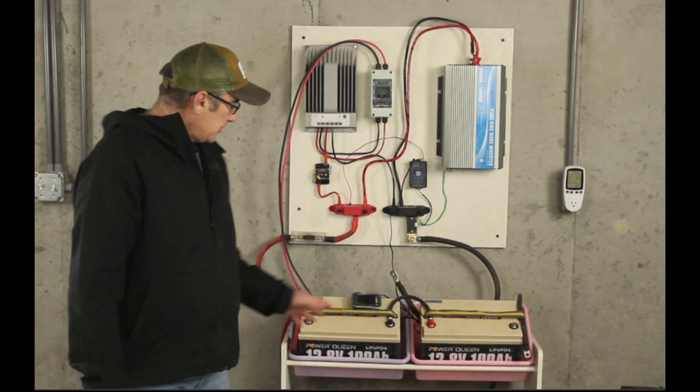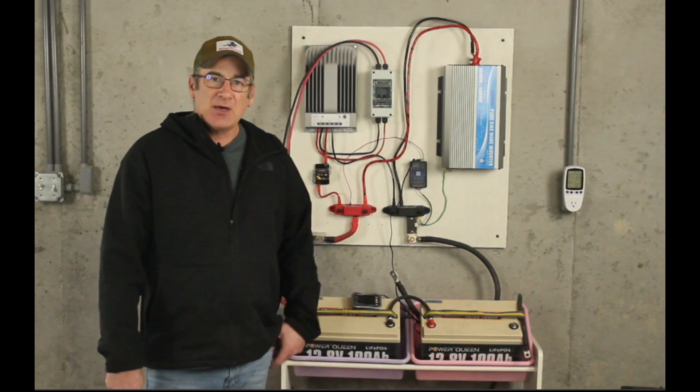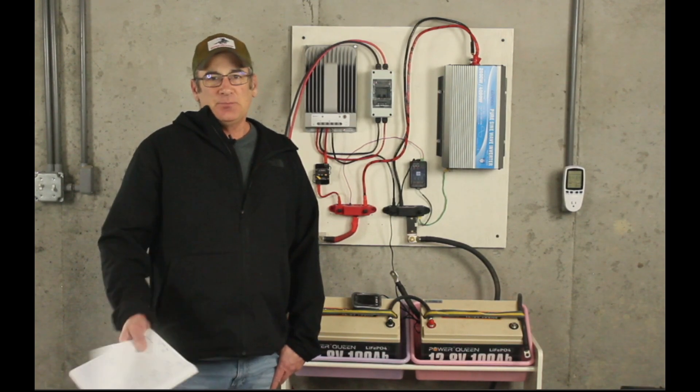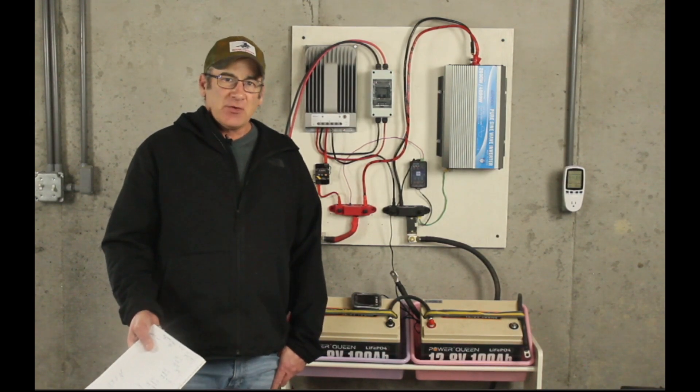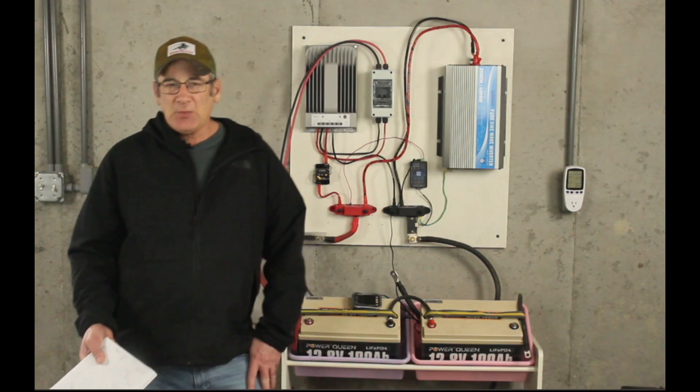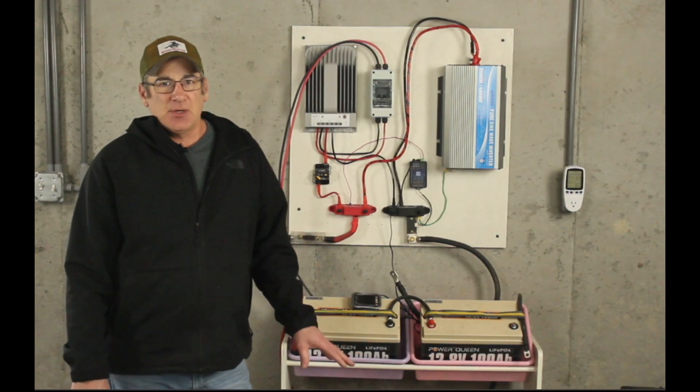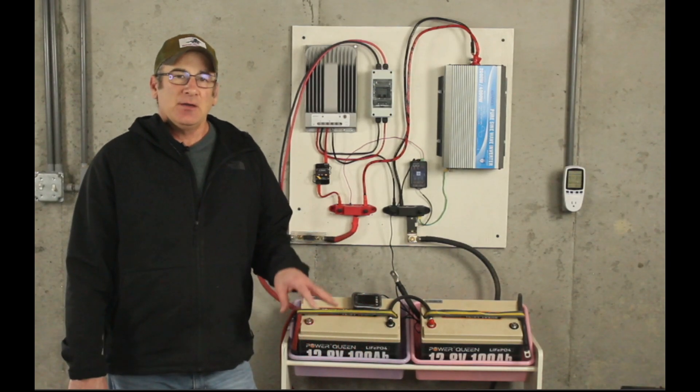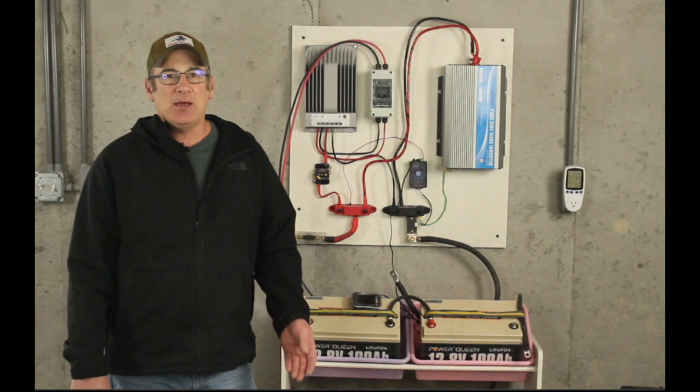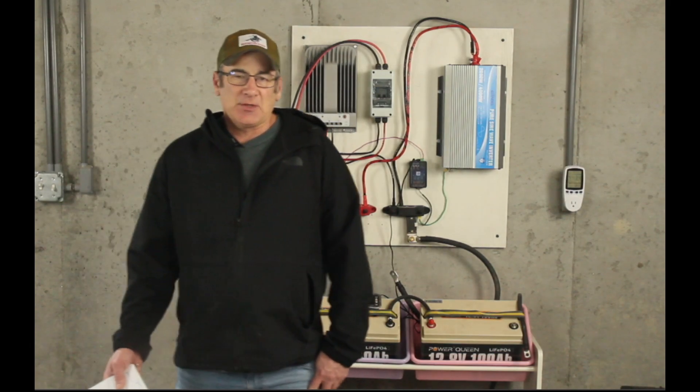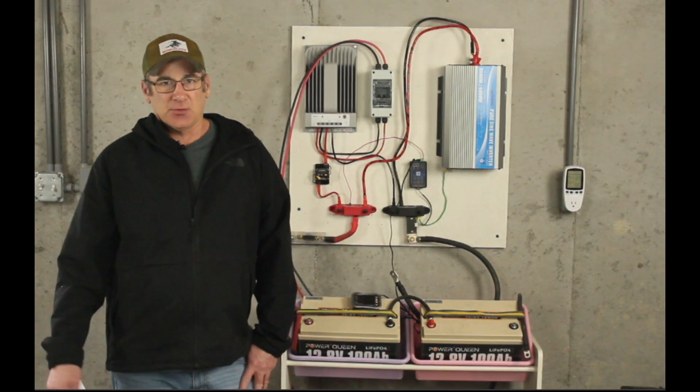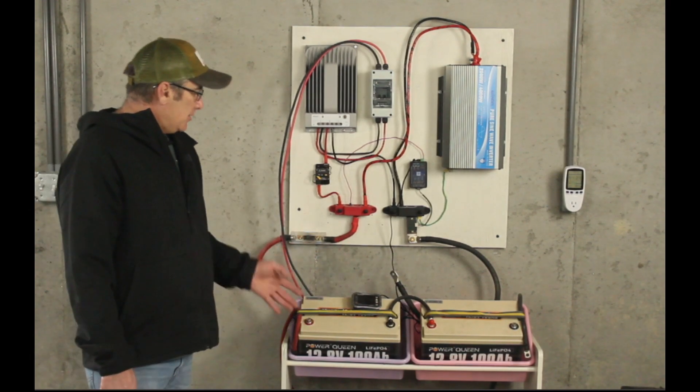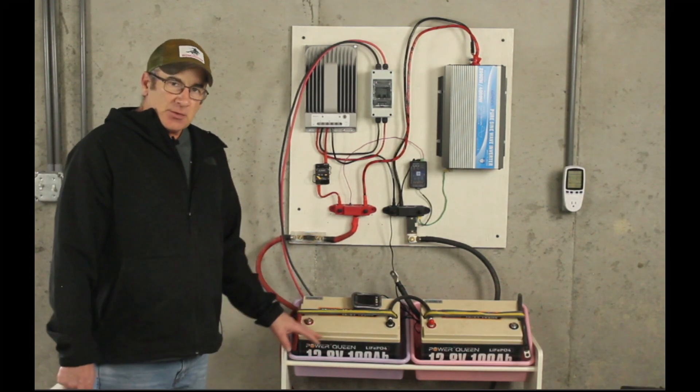The system I'm going to show you here is a 5 kilowatt hour system. We designed this thing to run a deep freeze, refrigerator, and then be able to run an air fryer or something like that if you needed to cook some food. So this is the system I've got right here, I'll go through it real quick.